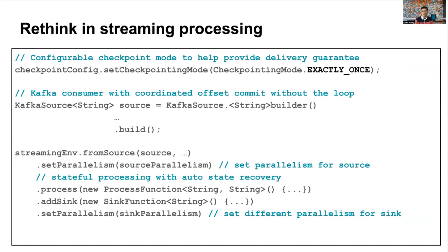This is where a stream processing framework like Flink shines. As shown in the code example, Flink helps you achieve delivery guarantees, automatically persists and restores application state through checkpointing, and provides a flexible way to assign compute resources to different data operators. These are just a few examples of what a stream processing framework can offer.